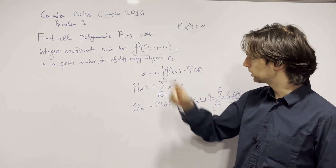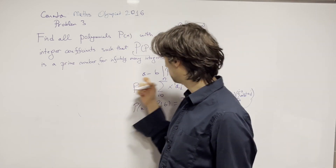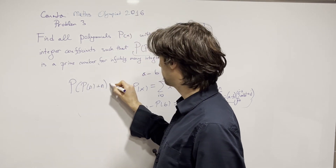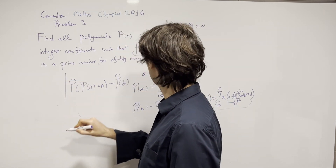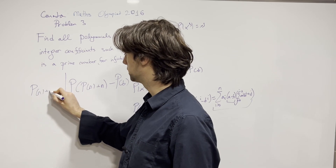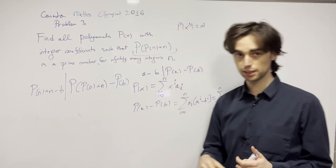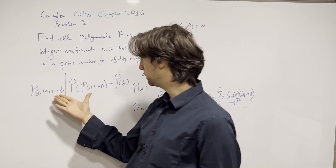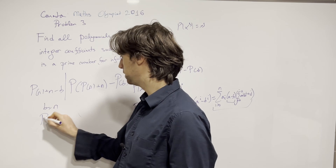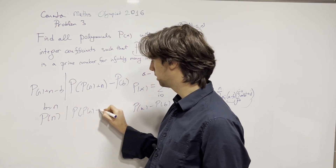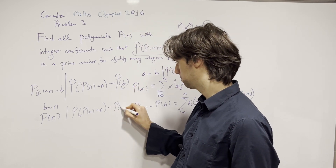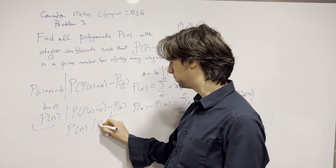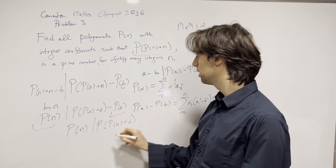So the thing we're going to do now is: we have P(P(n)+n) is a prime. I want to set a to be P(n)+n and I'm going to have P(a)−P(b) divisible by P(n)+n−b. Now, if I set b equal to n, then I have P(n) divides P(P(n)+n) − P(n). And now this is very cool because I can cancel P(n), and I have P(n) divides P(P(n)+n) for every integer n.